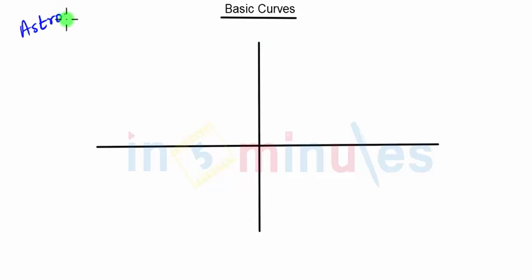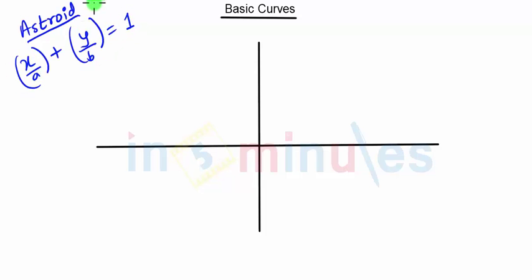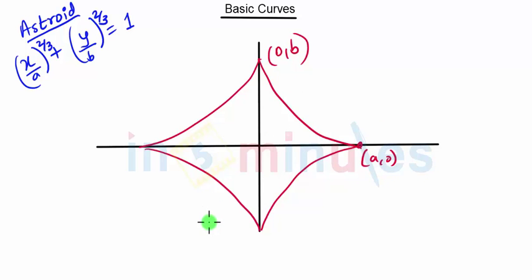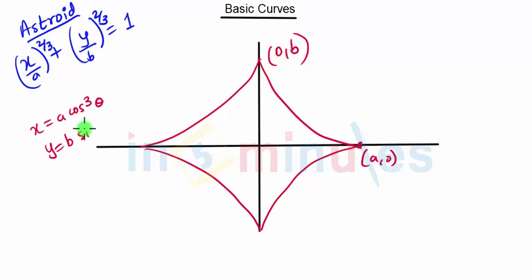After this we have another curve known as the asteroid. The asteroid equation is similar to an ellipse, but here we will have exponents of 2/3. The asteroid looks something like this — this point will be (a, 0) and this point will be (0, b). This is the Cartesian equation. The parametric equation is x equal to a cos³θ and y equal to b sin³θ.